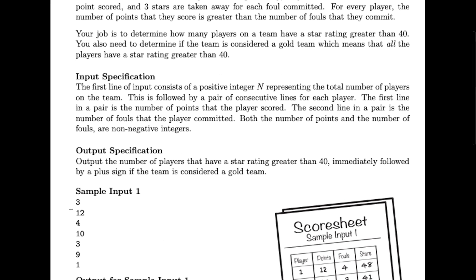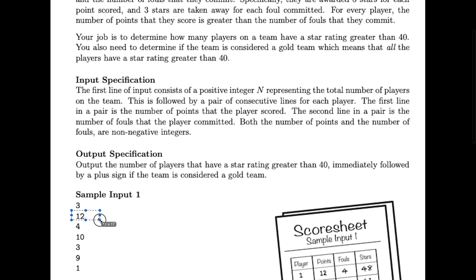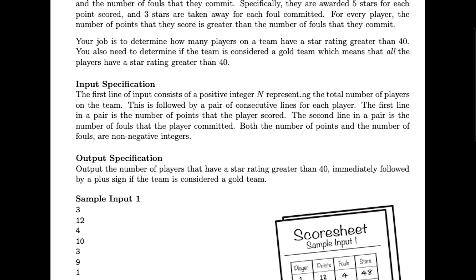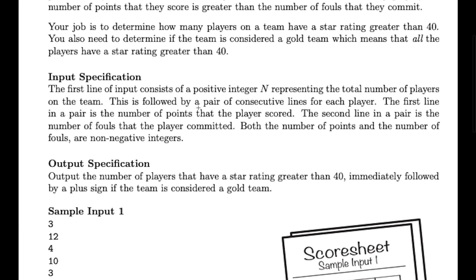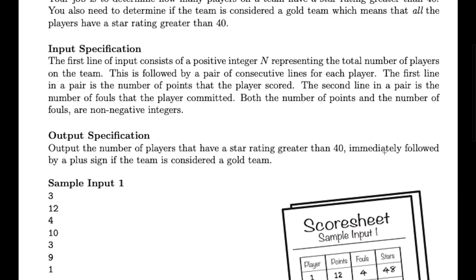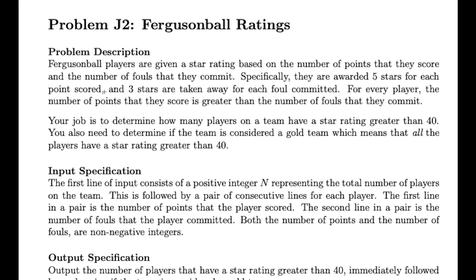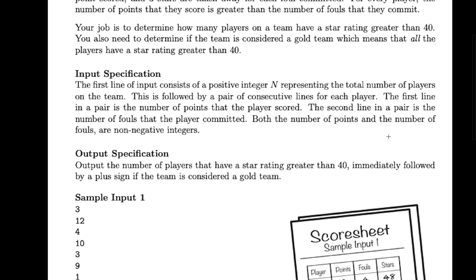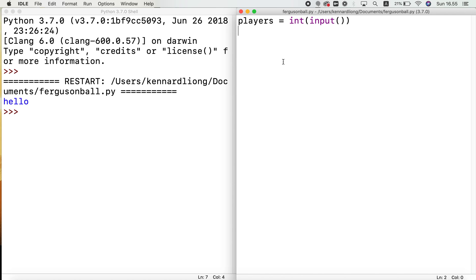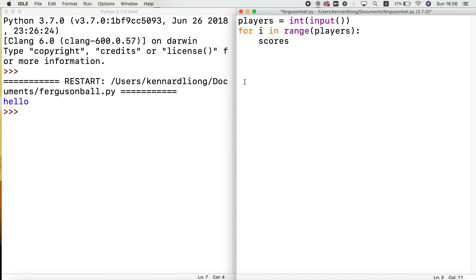Next, each player takes in the number of scores and the number of fouls. They did say both are non-negative integers. So: for i in range(players) — if there are three players, this loop runs three times. We're going to ask for their number of scores and their number of fouls: scores = int(input()), and fouls as another int input.